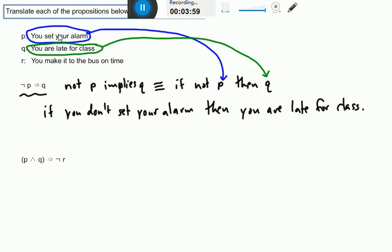Now you might say you're going to be late for class or you will be late for class. In everyday language there are equivalent ways to say the same thing, but if we want to be technical, we'd say if you don't set your alarm, then you are late for class or you will be late for class. So that would be the answer for the first proposition.